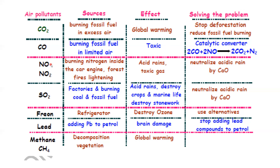Oxides of nitrogen such as nitrogen monoxide are produced by burning nitrogen inside the car engine. They are also produced by forest fires and lightning — during a thunderstorm, the high voltage energy of a lightning flash causes nitrogen to react with oxygen. This can cause acid rain and is a toxic gas.